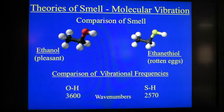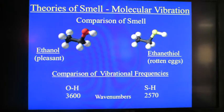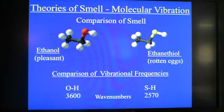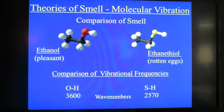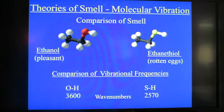Luca emphasized his theory by showing the molecules of ethanol and ethane thiol, both of which have essentially the same structure. Ethanol has a very pleasant alcohol smell, whereas ethane thiol is our rotten eggs — a very poor smell. Having the same shape means they should have the same smell by molecular structure theory. However, the difference is in the vibrational frequencies: the OH stretch is at 3,600 wavenumbers and the SH stretch is at 2,570 wavenumbers. So the distinction here is a vibrational distinction, not a molecular structure distinction.